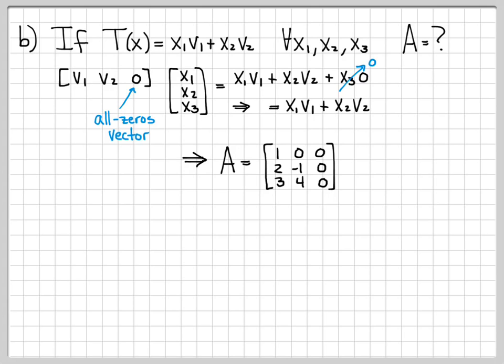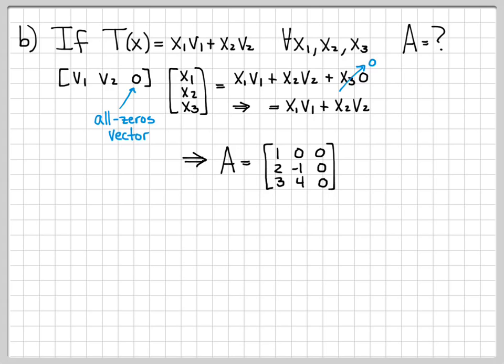These two examples illustrate a general strategy: when given the equation describing how a linear transformation works, the matrix A is often comprised of the vectors you're given as columns. You can guess the form of A and then verify it with simple matrix-vector multiplication. For more complicated examples you may need to solve a system of equations, but for these cases it was fairly straightforward.